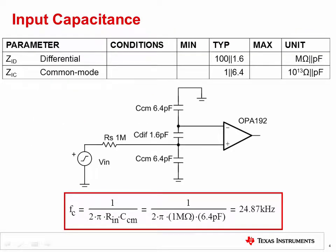Up to this point, we have seen how the op amp's gain bandwidth limitation sets the bandwidth. However, in some cases, other factors can affect bandwidth. This slide focuses on the effect of input capacitance on bandwidth. All op amps will have a differential and common mode input capacitance and impedance. This parasitic capacitance is from the semiconductor junctions on the input stage transistors. The differential capacitance is connected between the two inputs, and the common mode capacitance is connected on each input with respect to AC ground. These input capacitances are relatively small, so it is unlikely that you will see bandwidth limitations unless the input signal source has a large series resistance.